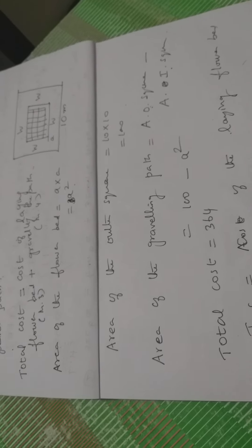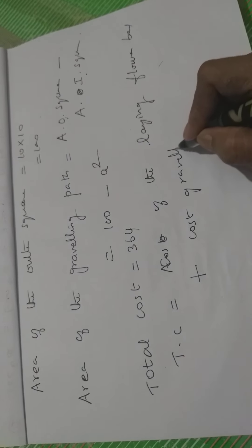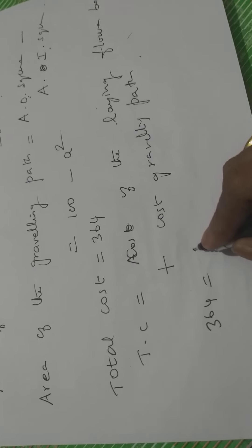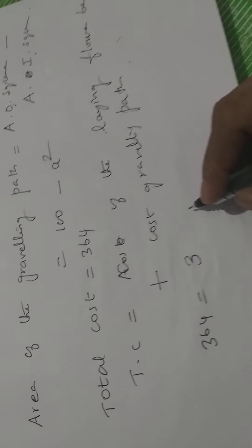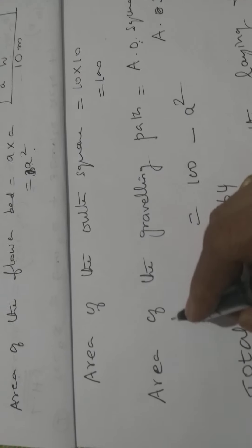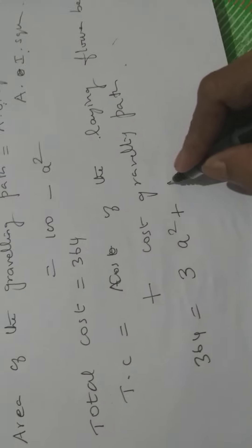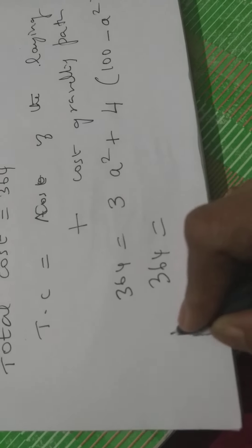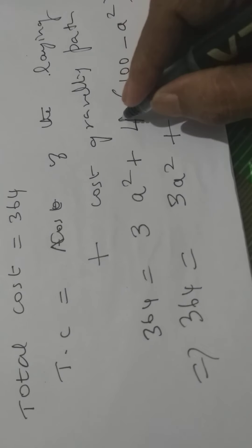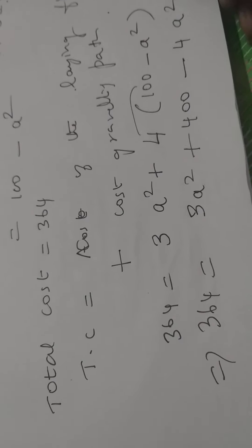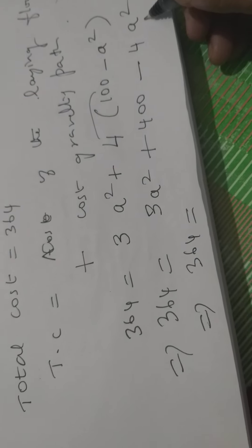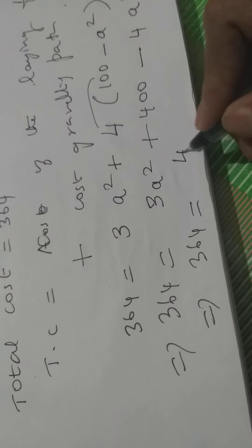Total cost: 364 equals cost of the flower bed plus cost of the graveling path. Cost of flower bed is ₹3 per square meter, so 3A squared. The graveling path area is (100 − A squared) at ₹4 per square meter, so 4 × (100 − A squared). Therefore: 364 = 3A² + 4(100 − A²) = 3A² + 400 − 4A².